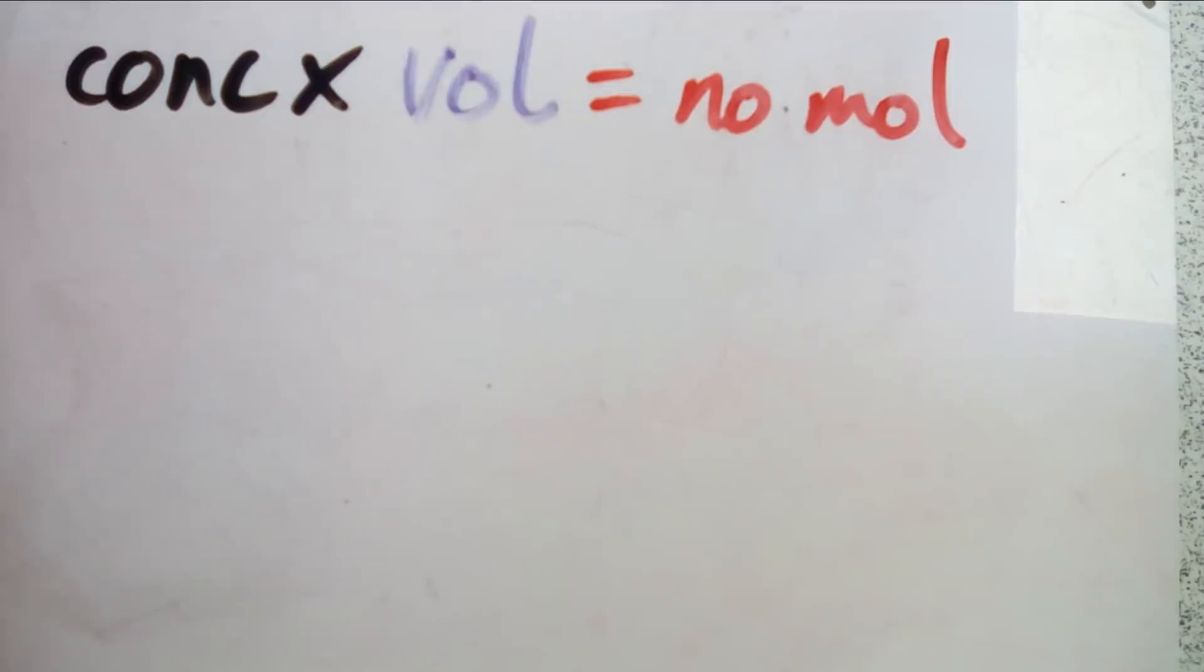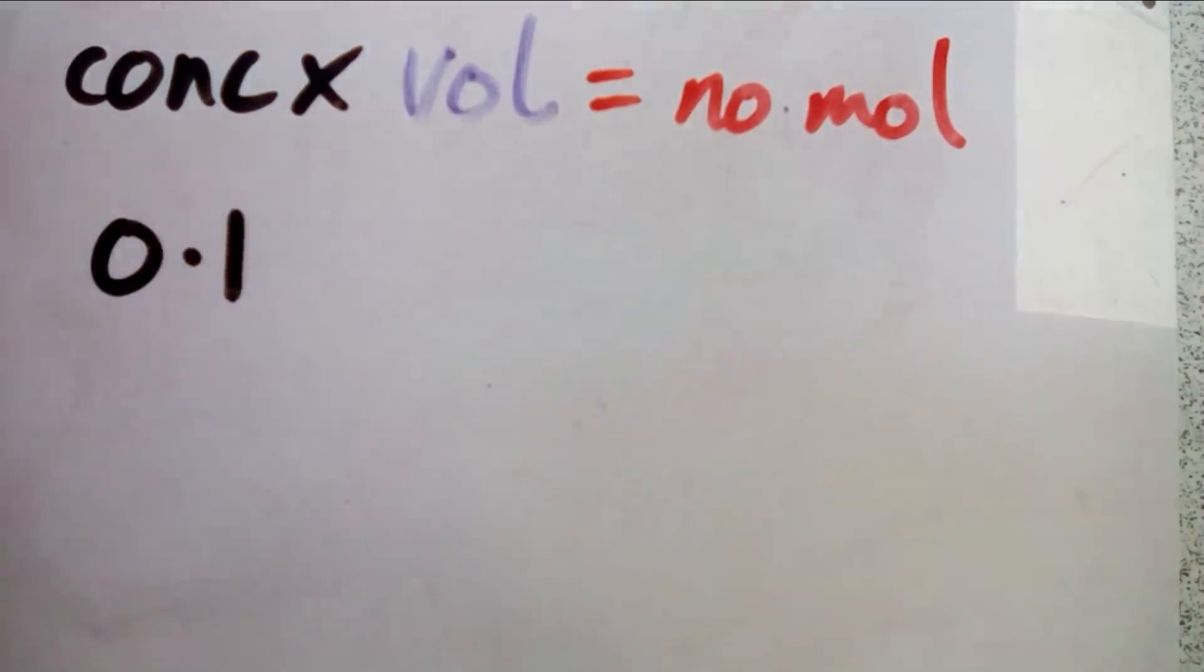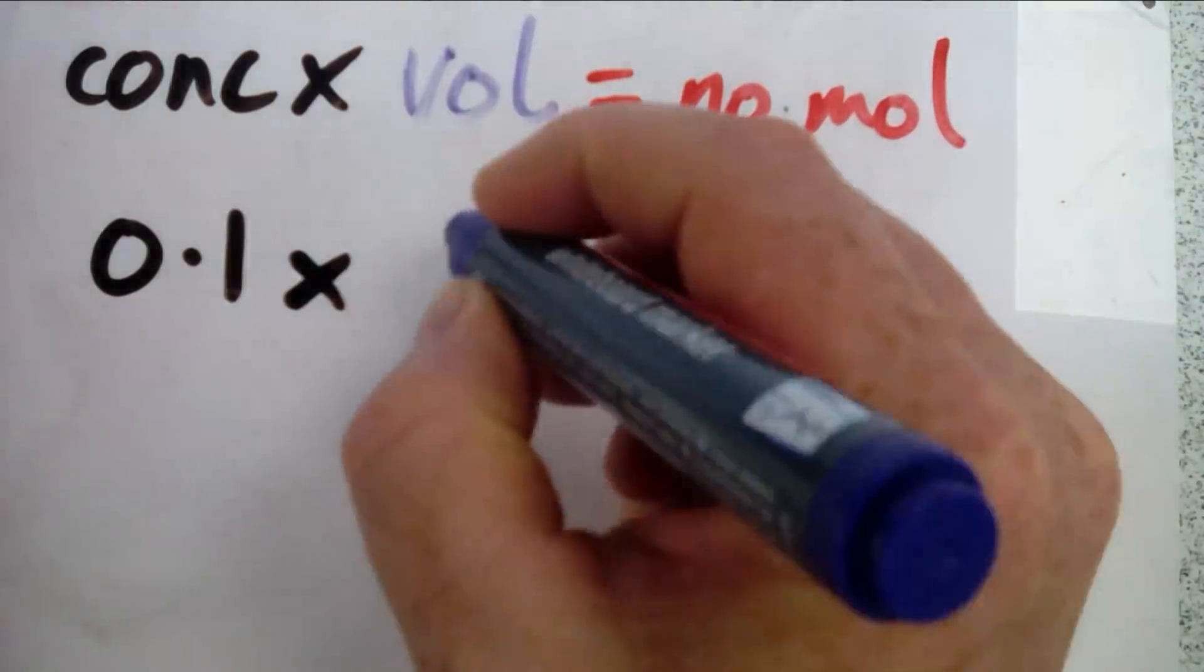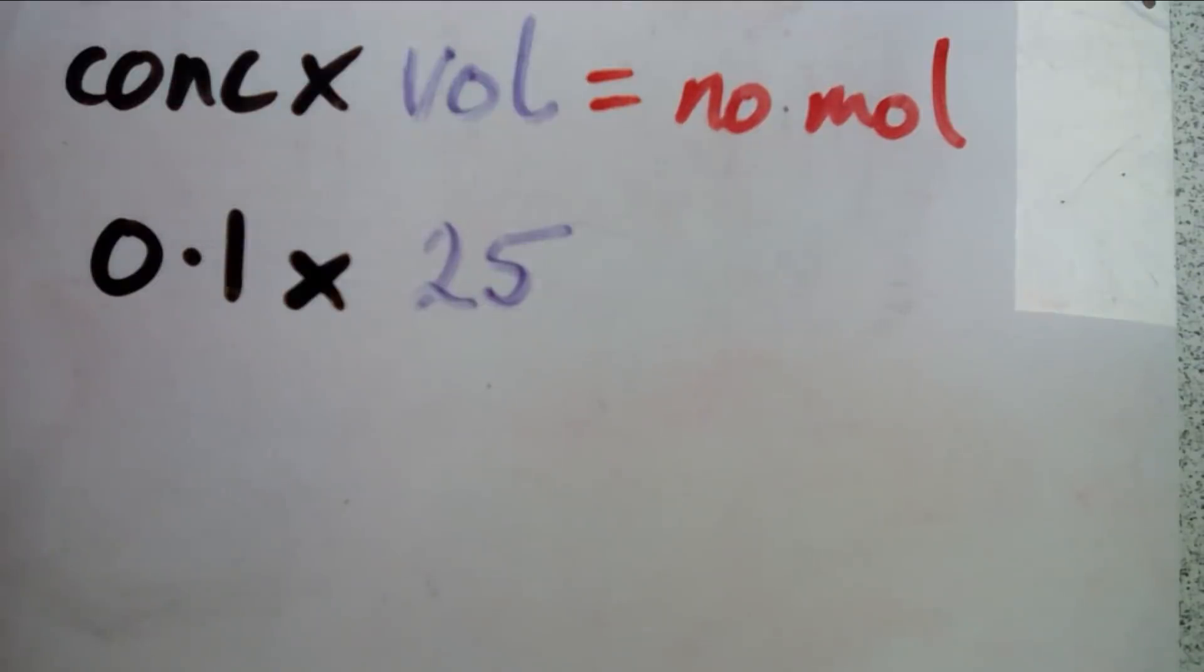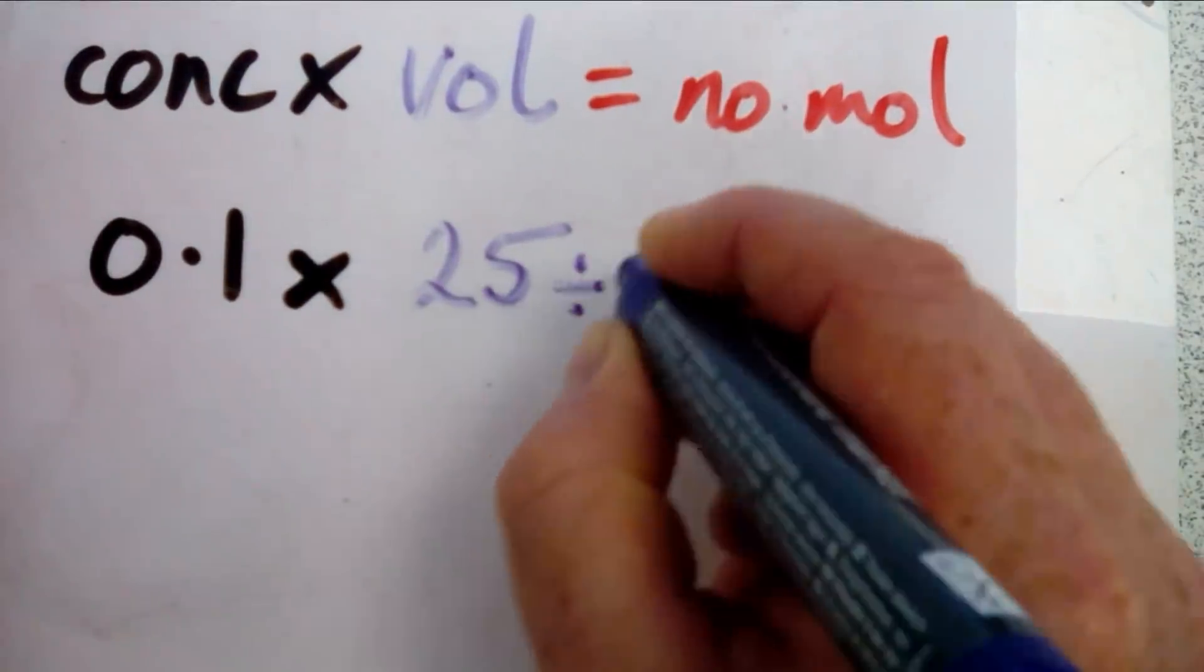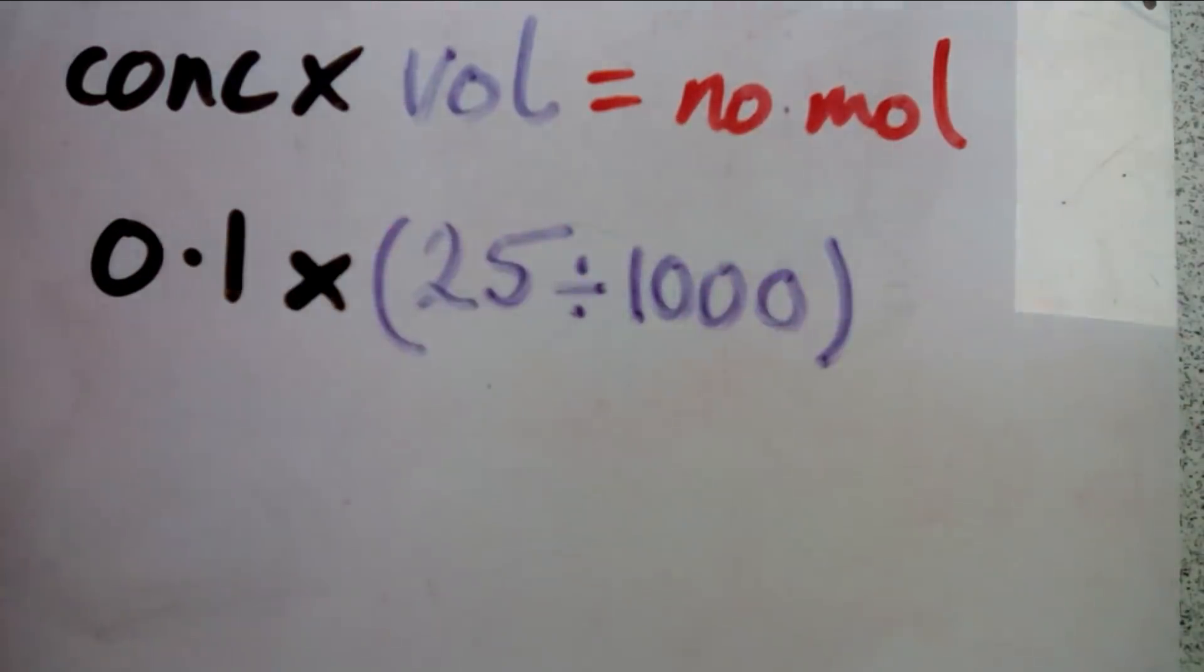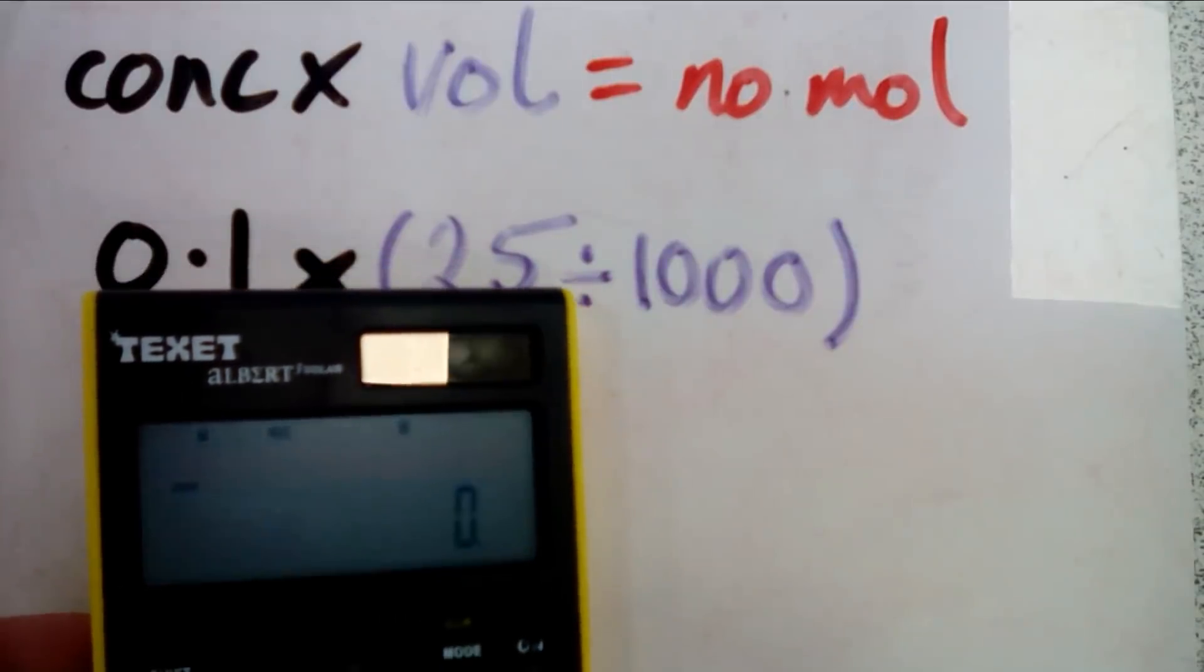Concentration is measured in moles per decimeter cubed and the volume of the solution that we had was in centimeters cubed, so there's a conversion that we need to do. We had a concentration of 0.1 moles per decimeter cubed and we had a volume of 25 centimeters cubed. To convert between centimeters and decimeters you need to divide by a thousand, so we put that in brackets so we do that bit first.